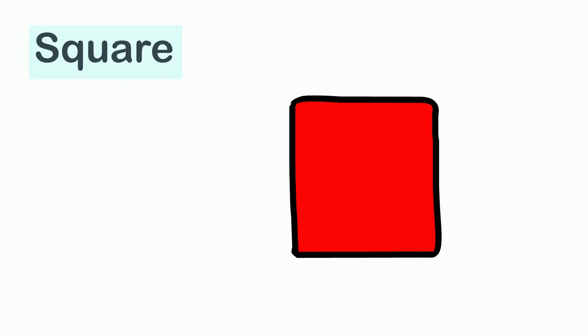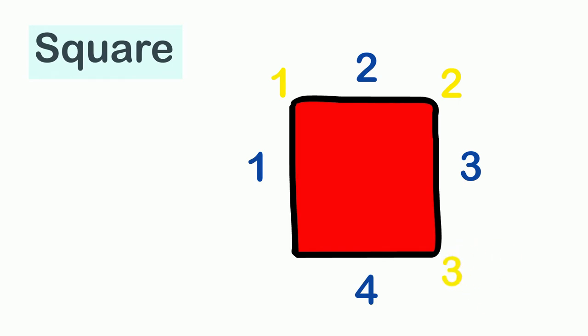This is a square. As you can see, it has four sides — one, two, three, and four. It also has four corners — one, two, three, and four. All four sides of a square are always equal, no matter how big or small the square is. For instance, all sides of this square are three centimeters long.